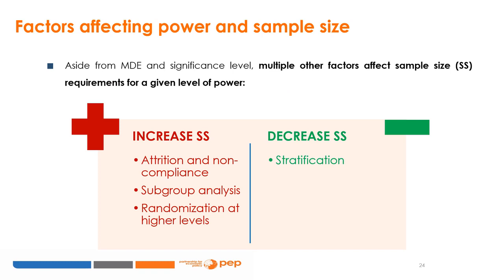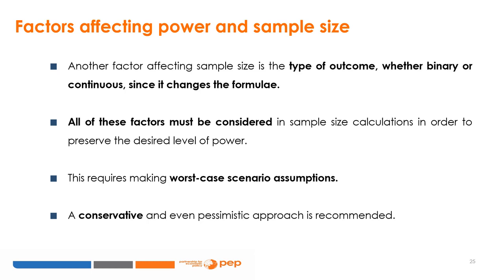Aside from the MDE and significance level, multiple other factors affect sample size requirements for a given level of power. Attrition and non-compliance, randomisation at higher levels, and subgroup analysis are factors whose presence requires larger sample sizes. Stratification is a factor whose presence generally eases demands on sample size. Another factor is the type of outcome — whether binary or continuous — since it changes the formulae. All of these factors must be considered in sample size calculations to preserve the desired level of power, requiring worst-case scenario assumptions and a conservative, even pessimistic approach.